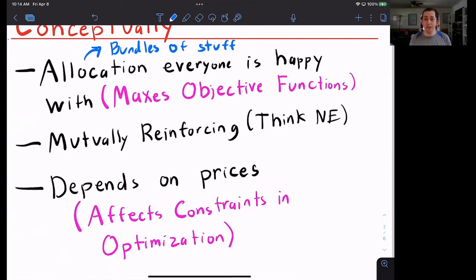A competitive equilibrium needs to be like a fixed point, so it needs to be mutually reinforcing, which is similar to a Nash equilibrium from game theory. This means that I am perfectly happy with my allocation in equilibrium, you are perfectly happy with your allocation, and there is no incentive for either of us to trade or deviate or find some other allocation that's better.